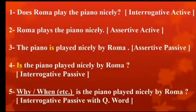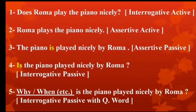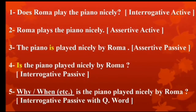Sentence 1 shows the interrogative active voice, which we change into the assertive active voice in sentence 2. In sentence 3, we follow step 2 and change its voice into passive. Sentence 4 follows step 3 where we take the auxiliary verb at the beginning. The last sentence shows the application of the question word. See some more examples to understand it.